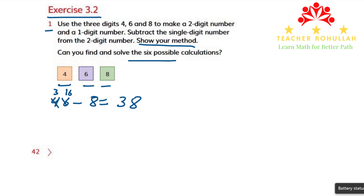The other possible numbers that we can make can be 68 minus 4. 68 minus 4 equals 64, because 8 minus 4 is 4, and 6 minus nothing is 6.